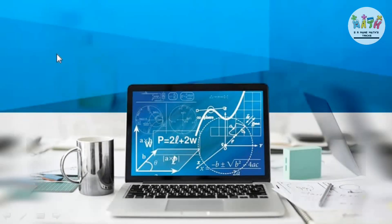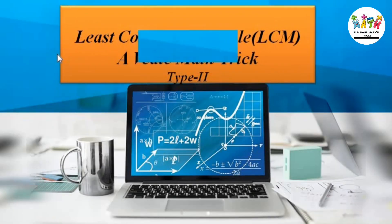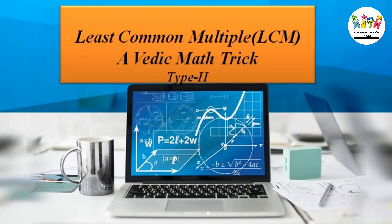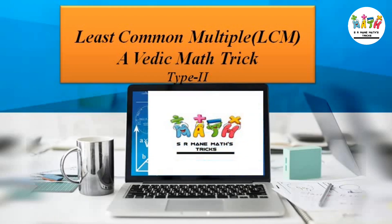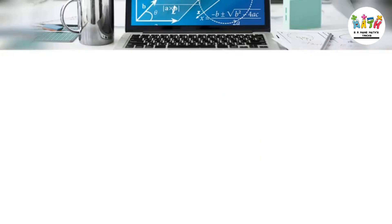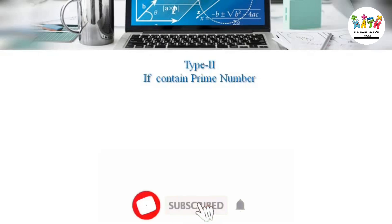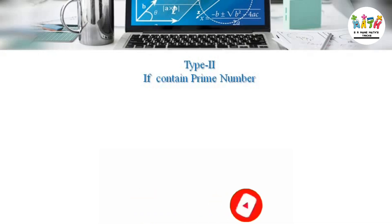Hi friends, today we have to discuss the least common multiple. This is a Y-pick mathematics trick, type second. In the previous video we discussed the LCM type first method. In type second, if the content contains a prime number, we take that prime number and apply a different approach to find the LCM.